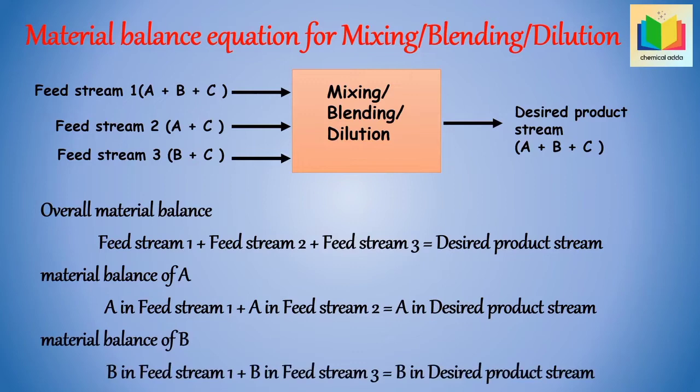Similarly, the material balance of C can be written as: C in feed stream 1 + C in feed stream 2 + C in feed stream 3 = C in the desired product stream. Now let's see some examples of mixing, dilution and blending operations.